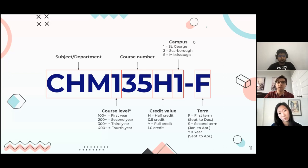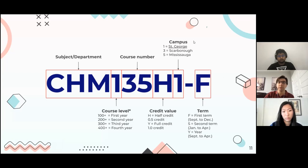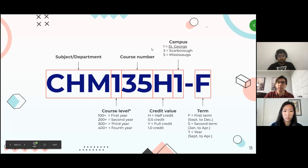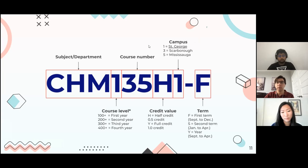Then you have the course number, which is a fingerprint for that specific course within the department. Next is the credit value — either a half credit or full credit depending on duration. H indicates it's a semester-long course. The last number indicates which campus it's offered on — most of you are at St. George campus, but Scarborough and Mississauga have three or five respectively. And very last, we have which term it takes place: the first term (September to December), the second term (January to April), or Y for a full year-long course.